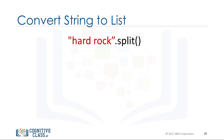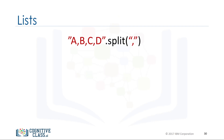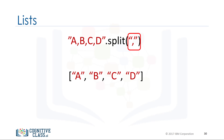We can convert a string to a list using split. The method split converts every group of characters separated by a space into an element of a list. We can use the split function to separate strings on a specific character, known as a delimiter. We simply pass the delimiter we would like to split on as an argument — in this case, a comma. The result is a list where each element corresponds to a set of characters separated by a comma.